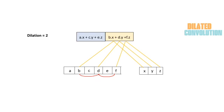Ideally the next output element would start from c, but the next element to be multiplied by z would fall beyond f, which is not present in the vector. So bx + dy + fz is the final output for dilation factor two.